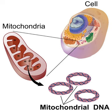Unlike nuclear DNA, which is inherited from both parents and in which genes are rearranged in the process of recombination, there is usually no change in mtDNA from parent to offspring. Although mtDNA also recombines, it does so with copies of itself within the same mitochondrion. Because of this, and because the mutation rate of animal mtDNA is higher than that of nuclear DNA, mtDNA is a powerful tool for tracking ancestry through females' matrilineage, and has been used in this role to track the ancestry of many species back hundreds of generations. The rapid mutation rate in animals makes mtDNA useful for assessing genetic relationships of individuals or groups within a species and also for identifying and quantifying the phylogeny — evolutionary relationships — among different species.